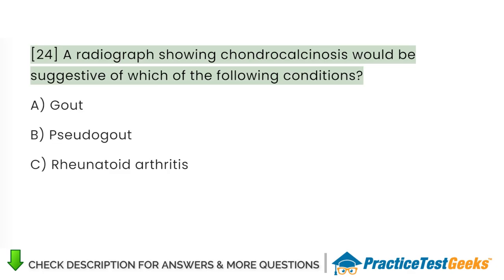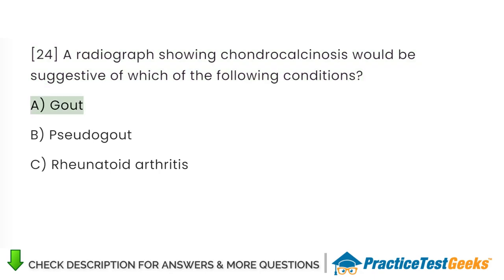A radiograph showing chondrocalcinosis would be suggestive of which of the following conditions? A. Gout. B. Pseudogout. C. Rheumatoid arthritis.